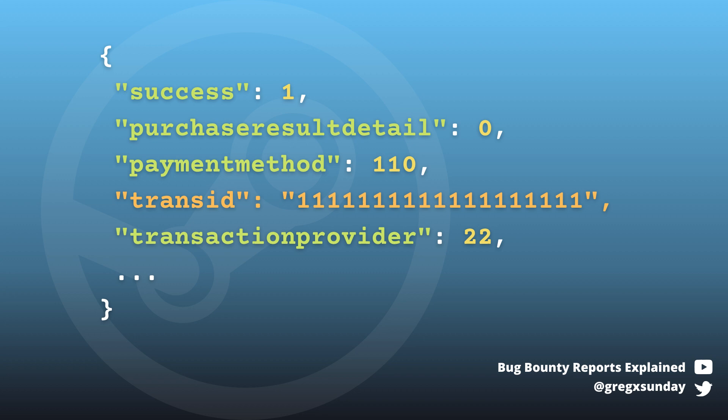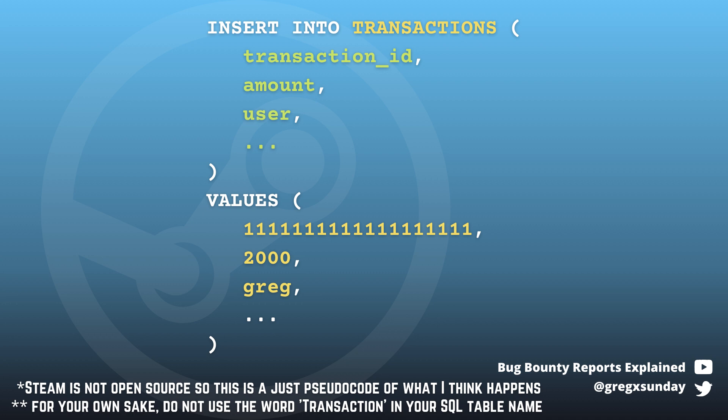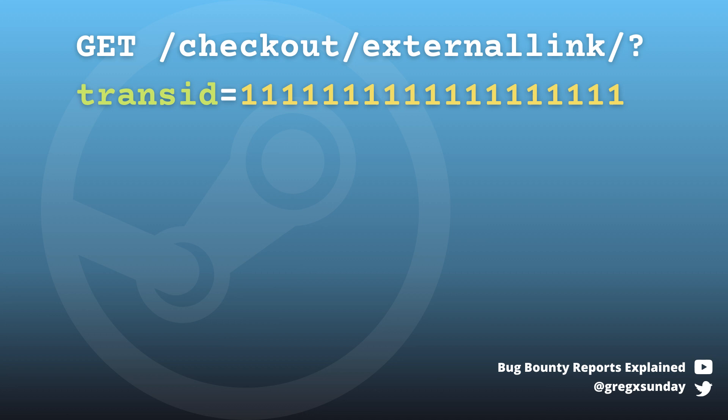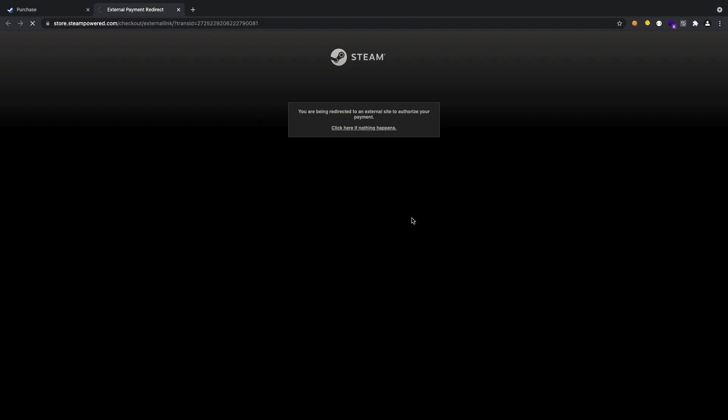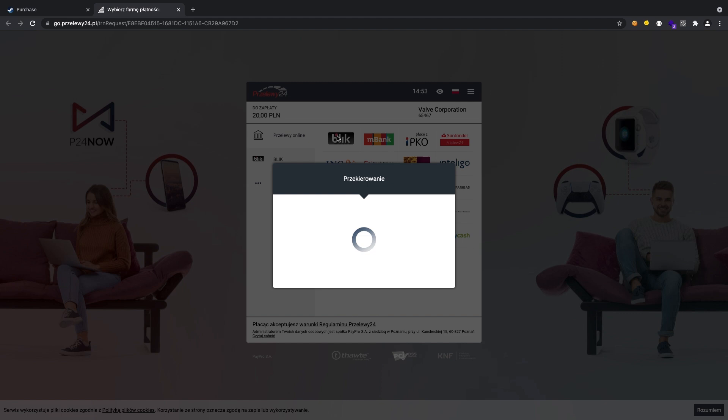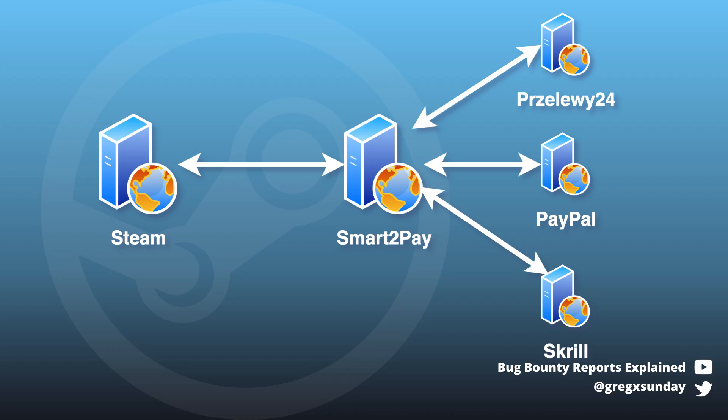What probably happens on the backend: Steam adds this transaction to the database with the transaction ID, amount of funds to add, the user, and other data about it. Next, there's a GET request to an external link endpoint with the transaction ID as the parameter. In the HTML of the response there is a form that will be sent to the Smart2Pay server. I chose Przelewy24 as my payment provider, but that's a local Polish company. For a global firm like Steam it could be hard to integrate with different providers for different countries. That's why they use Smart2Pay — it's a bridge between Steam and payment methods in the whole world. Steam integrates with one Smart2Pay API, which on the other side integrates with over 200 payment methods for different countries.